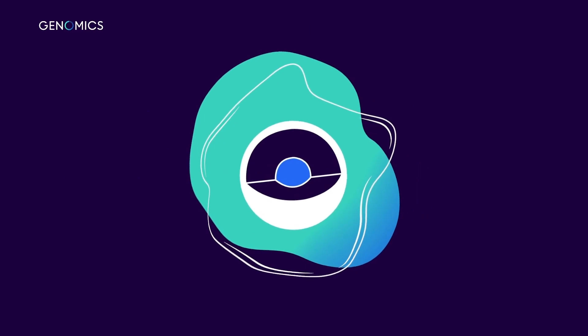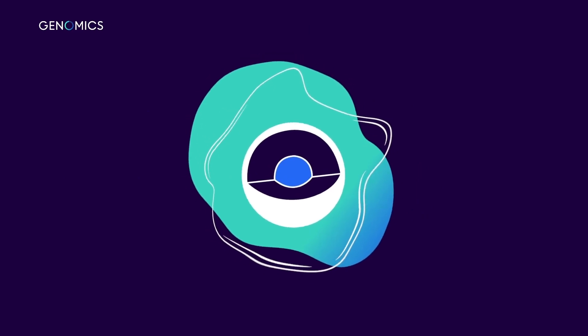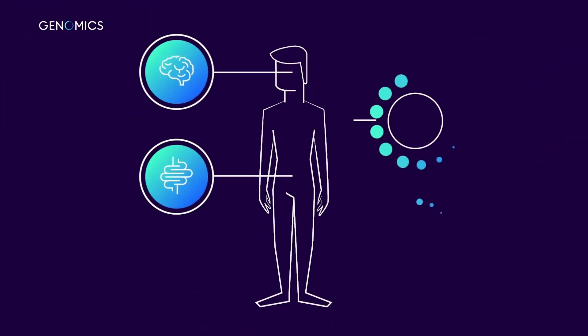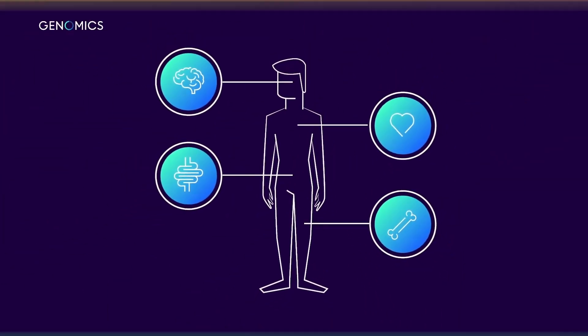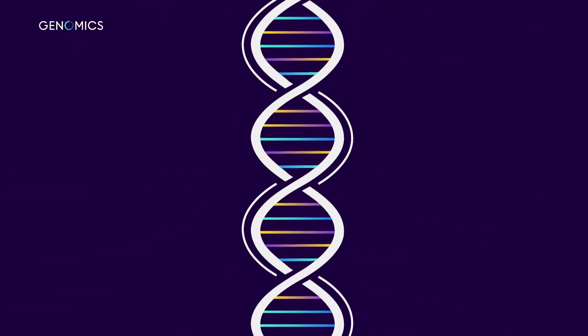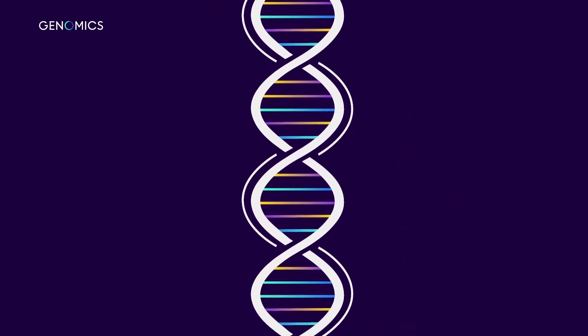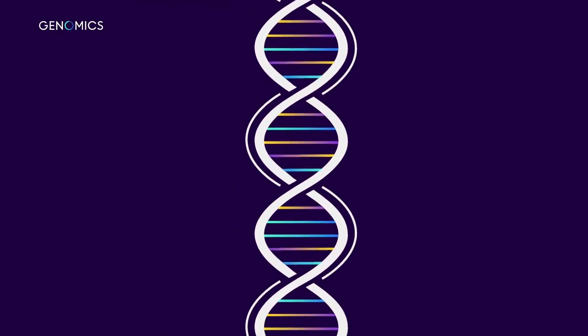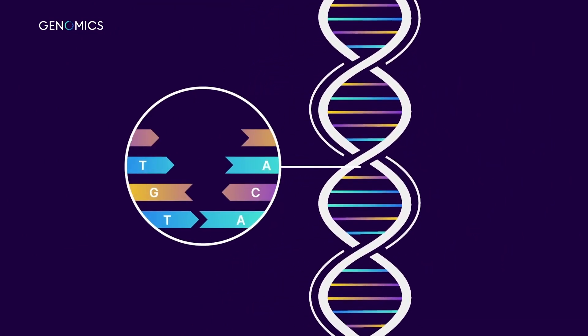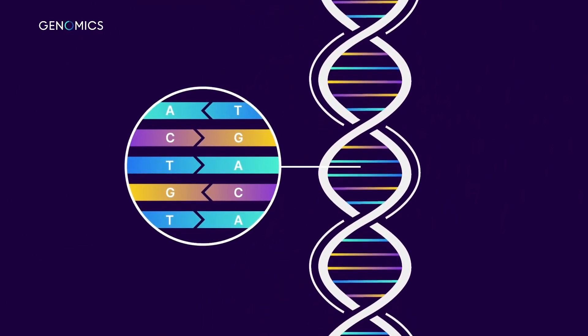DNA is inside a person's cells and is the blueprint for how the body functions. DNA is made up of individual units that are like letters forming the instructions in the blueprint.